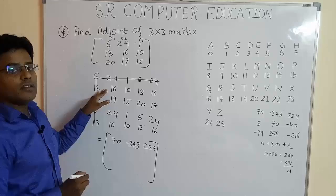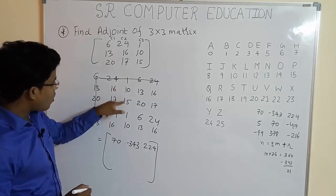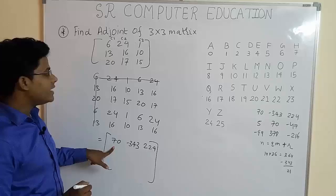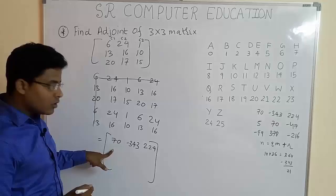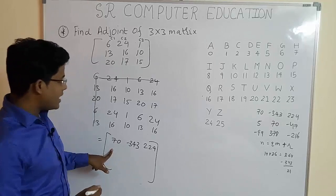Pay attention here students. We are multiplying column wise and writing the answer row wise. So, first element of the second row is calculated like this.